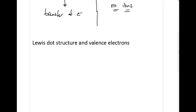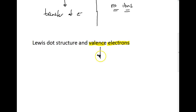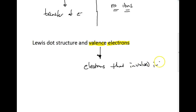The next thing I want to talk about is Lewis dot structures and something called valence electrons. So let's start with valence electrons first, and I think that will lead us into where we want to go with forming compounds. A valence electron is electrons that are involved in bonding — forming those covalent bonds that we find in molecular compounds.